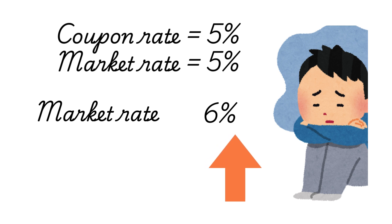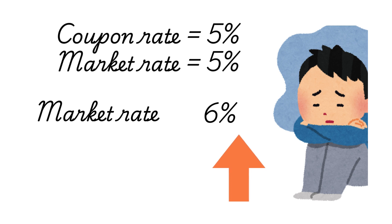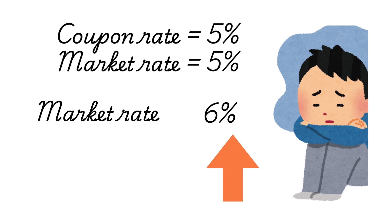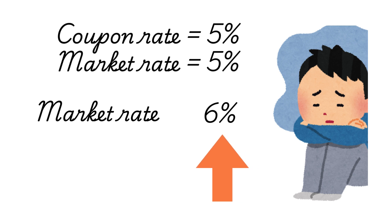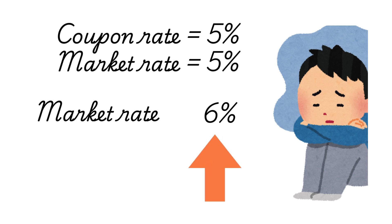are stuck with a lower interest paying instrument. As a result, you wish to sell it off. However, the buyers don't want to buy it for the very same reason that you want to sell. If you really have to make a distress sale, you will have to lower its price and sell off the bond at a discount. What you observe is that the bond price falls as a result of a rise in the market rate.